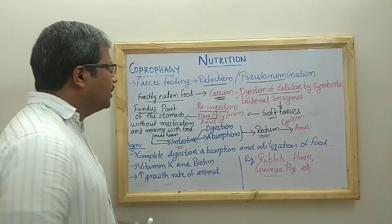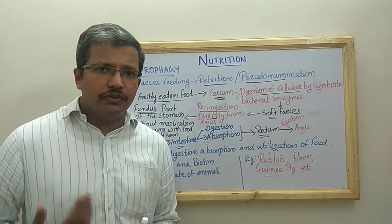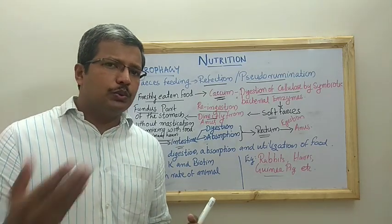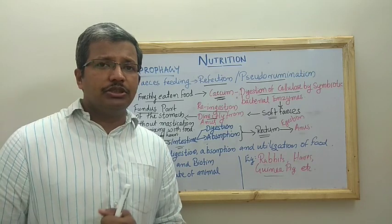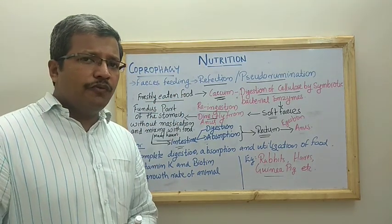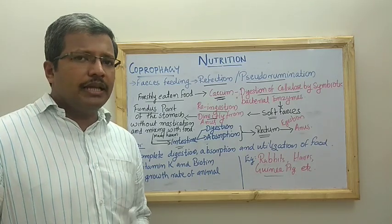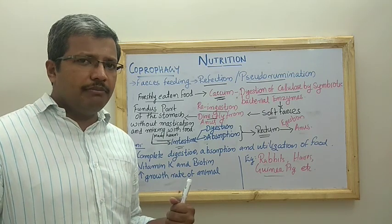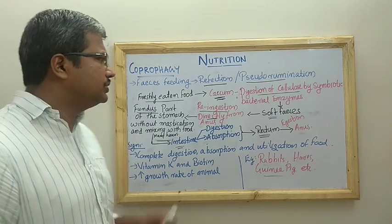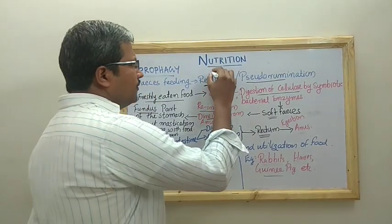Coprophagy — what is meant by that? It is actually the re-feeding, re-ingestion of the fecal matter of the organism again. So two times the food is digested; the food will be passing through the digestive tract two times. That mechanism is known as coprophagy. It is a fecal feeding mechanism where the food passes through the digestive system two times, and the organism feeds on its own fecal matter for complete digestion of food. It is otherwise known as refection.